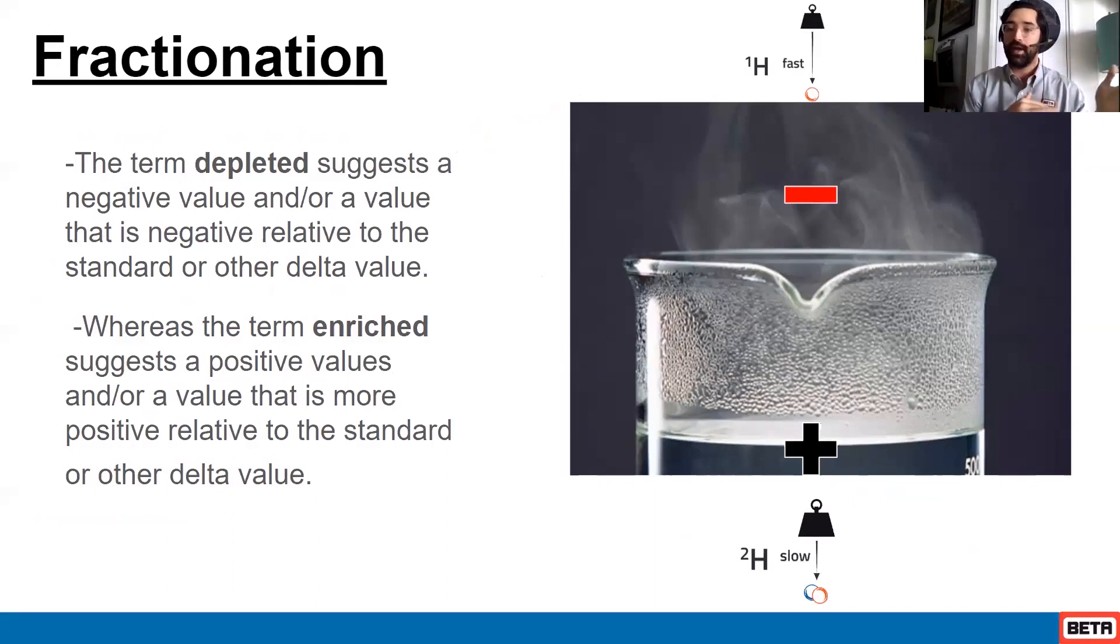What we would expect is the liquid phase to have more of the deuterium, of the 2H's, because they're reacting less to the phase change. And then we would expect our vapor to be much more depleted or have many more 1H's, or protium present.